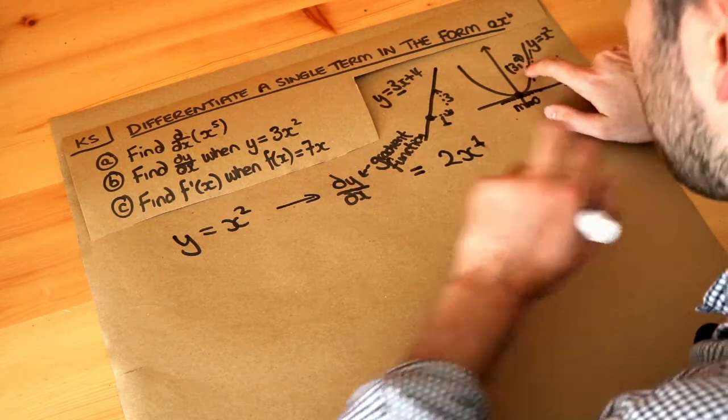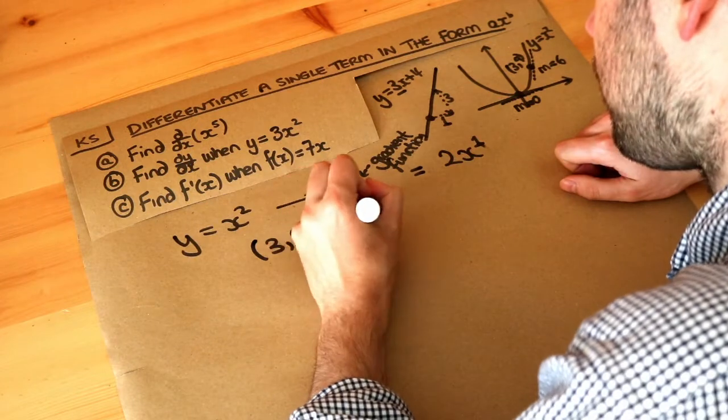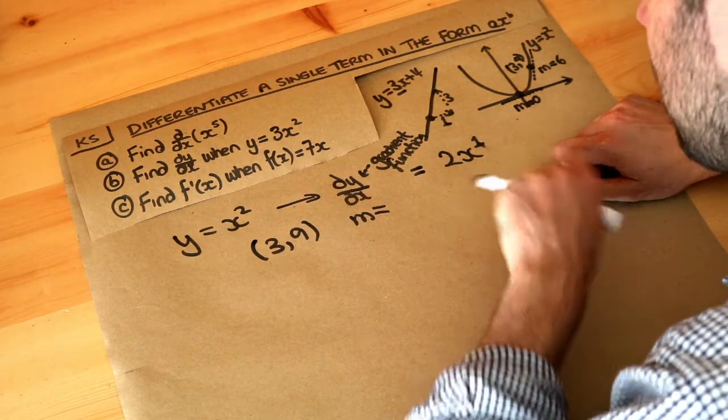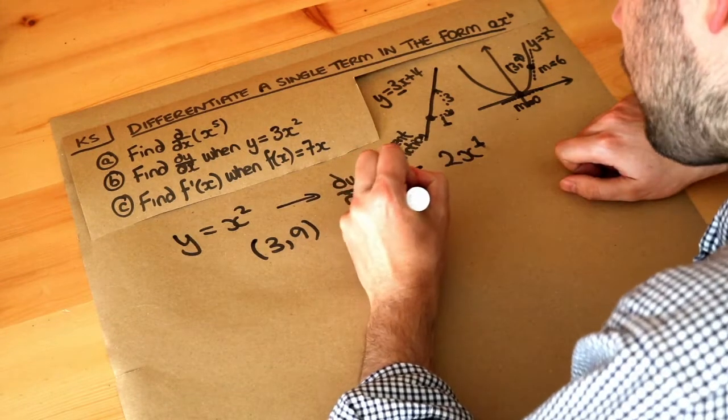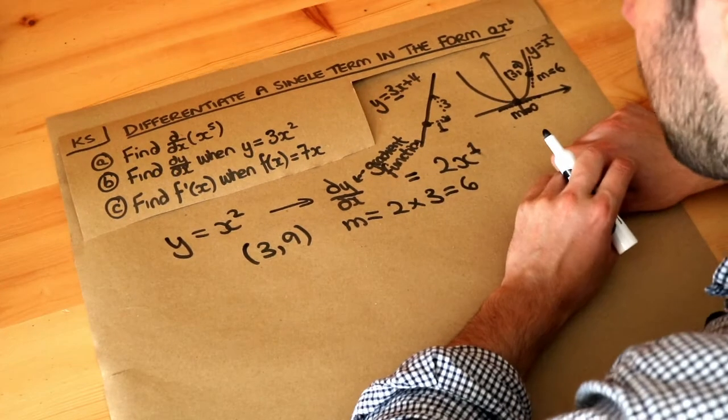And that expression enables us to find the gradient for any point. For example, with the 3, 9 point, the gradient using this gradient function, dy over dx is 2x, is going to be 2 times the X value, which is 3, which is 6, which is exactly what I wrote up here.